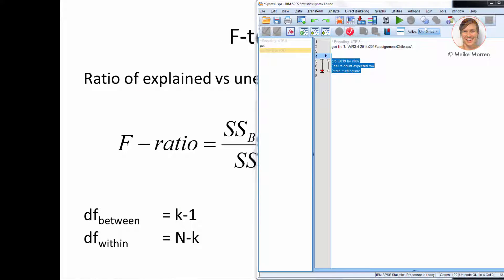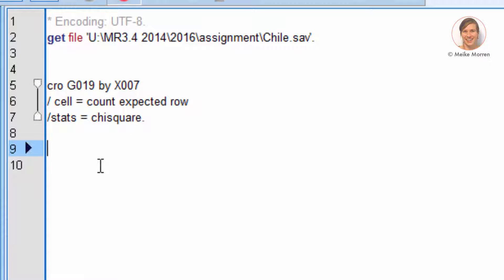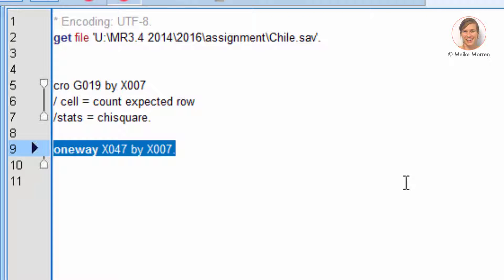First, if you want to conduct an ANOVA test, you just type in one way, which is short for one-way ANOVA. And we test the income. And we test it by the marital status, which would be recognized by SPSS as a group variable.